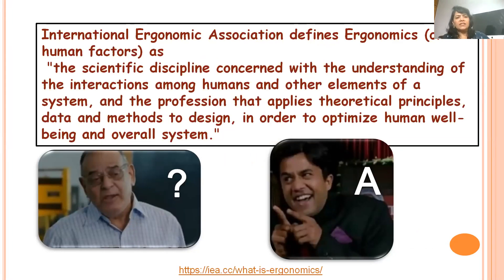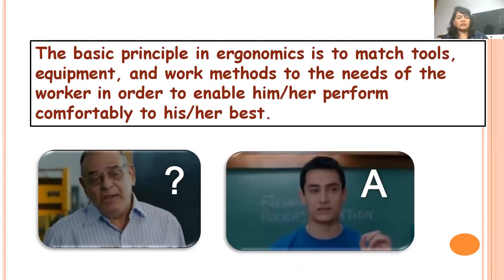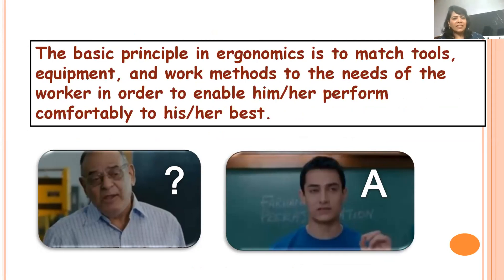Ergonomics is derived from the Greek term where 'ergo' means work and 'nomos' means study of. Dr. Garikar defined ergonomics for dentists as a science of maximizing human performance and well-being, involving the study of human excellence and health. The International Ergonomic Association defines it as the scientific discipline concerned with understanding the interactions among humans and other elements of the system. In simple words, it is the basic principle of ergonomics to match the tools, the equipment, and the work methods to the needs of the worker in order to enable him or her to perform comfortably to their best.